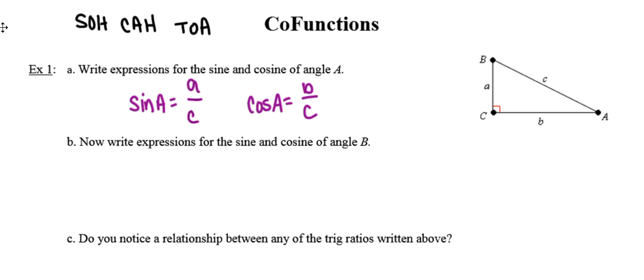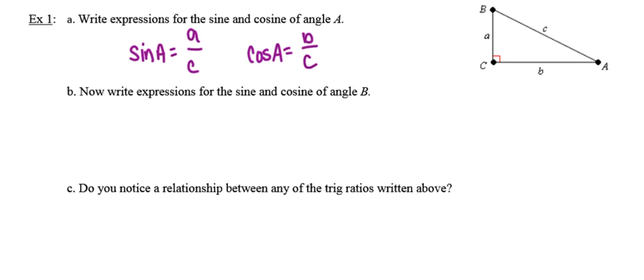In part B, they want us to do the same thing, but this time using angle B as a reference angle. So the sine of angle B is the opposite side, which is leg B over the hypotenuse. The cosine of angle B is going to be the adjacent side or the adjacent leg, which is leg A over C.